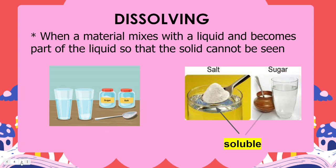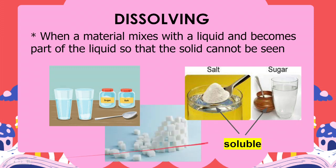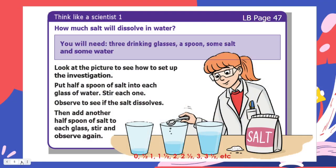Sugar and salt both dissolve in solution relatively easily, but one dissolves quicker than the other. Cold water isn't able to dissolve as much sugar as hot water. Another name for the liquids inside the cups is a solution. When the solution can no longer dissolve sugar, it becomes a saturated solution, meaning sugar starts forming on the bottom of the cup.